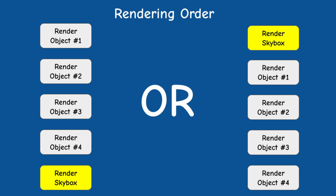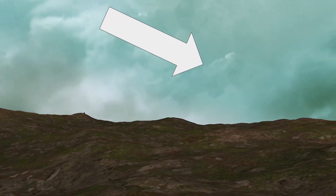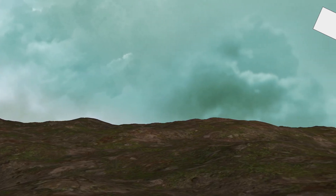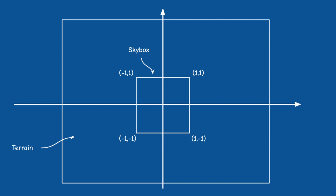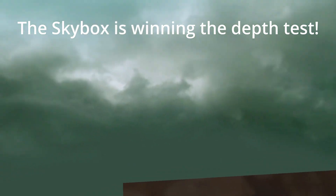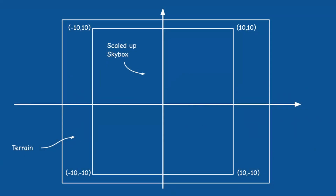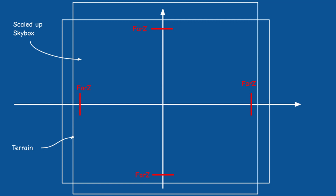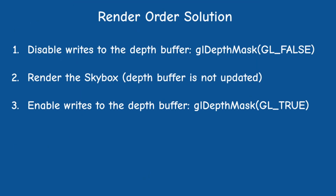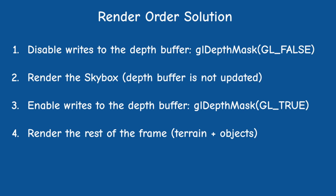The last thing to worry about is the rendering order between the skybox and everything else. We want the skybox to occupy all pixels that haven't been touched by the terrain. One option is to render the skybox first while disabling writes to the depth buffer — when the terrain is rendered it always wins the depth test and the skybox remains only on untouched pixels. However, this is bad for performance since the initial render of the skybox processes all pixels in the frame, and many will later be overwritten by the terrain, wasting GPU cycles.